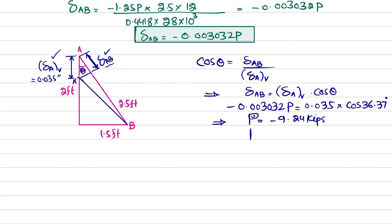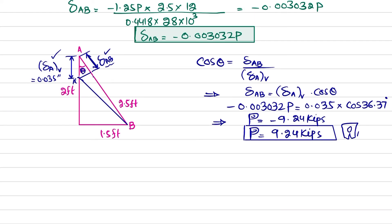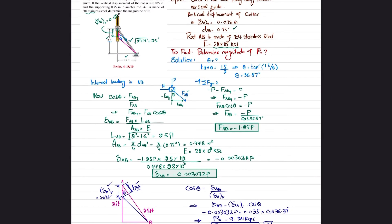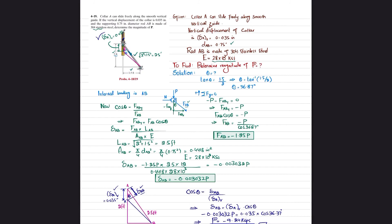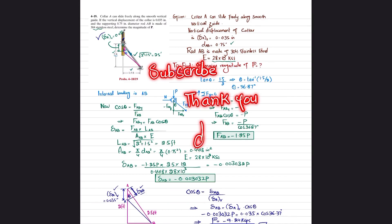So P equals 9.24 kips. The negative sign means P is directed downward, which was already shown in the diagram. This is the value of P that can be applied to collar A so that it covers a vertical displacement of 0.035 inch. That was all about problem 4-19. If you have any questions, ask in the comment section. Thank you for watching.